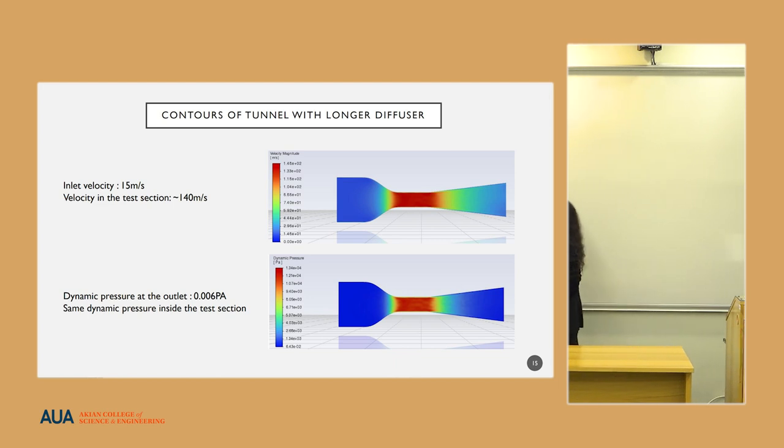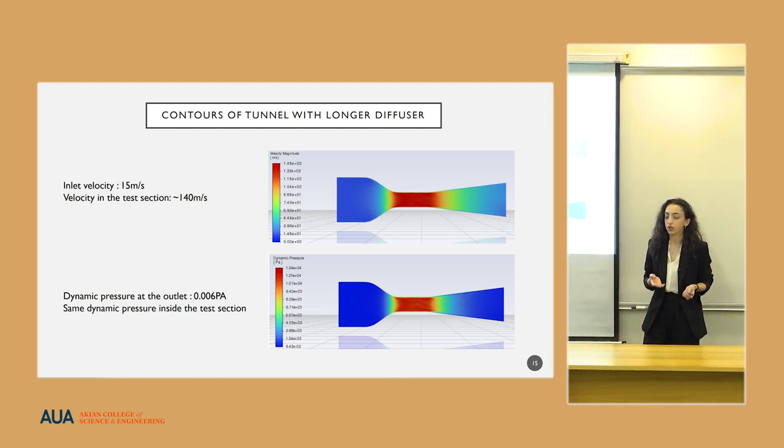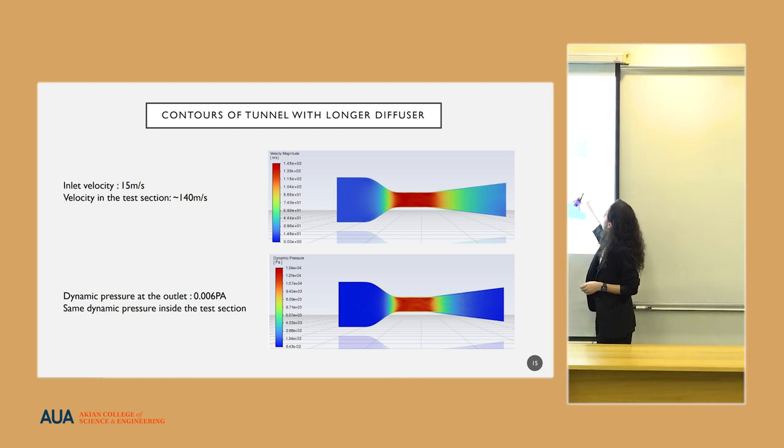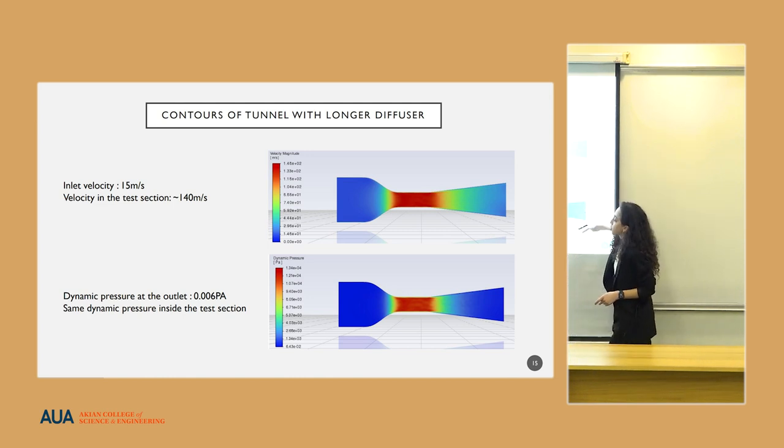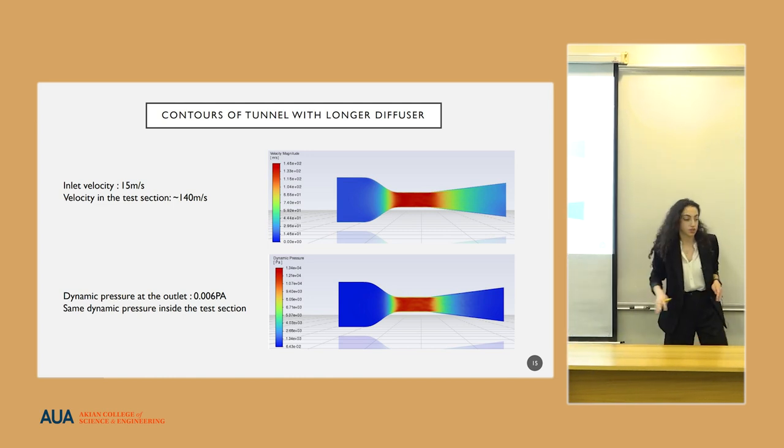To address this issue, we conducted several more experiments based on theoretical basis. The diffuser was elongated. While we have the same velocity in the test section, 140 meters per second, the dynamic pressure gets almost zero pascals.